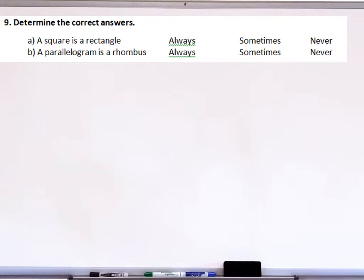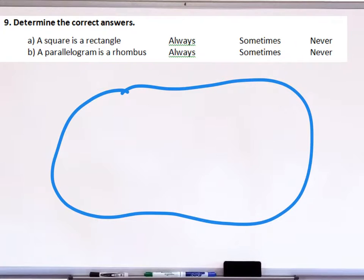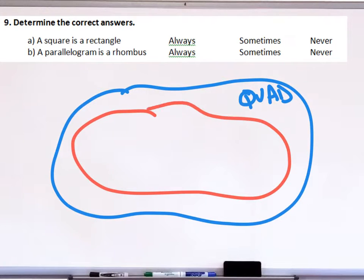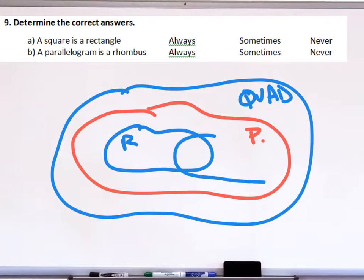These have to do with what we already know in terms of the Venn diagram. So let's create our big Venn diagram. Here's the quads. Let's make the parallelograms. And then, if you remember, we had rectangles, something like this, and we had rhombus, something like this. And in here was our group of squares.